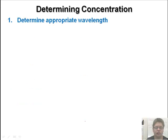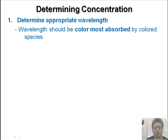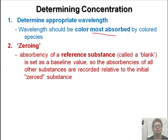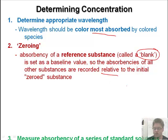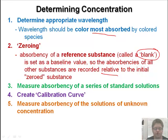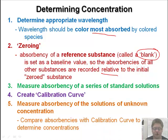Determining concentration: you determine the appropriate wavelength. That's the first step set in the spec 20. Wavelength should be the color most absorbed. You zero the spec 20. The absorbency of a reference substance is called a blank. This is a baseline value, so the absorbance of all other substances are recorded relative to that initial zero substance. Then you do the absorbency of a series of standard solutions. Then you create a calibration curve and measure the absorbency of solutions of unknown concentration. Then you can use your calibration curve to determine the concentrations.